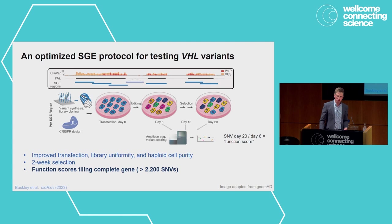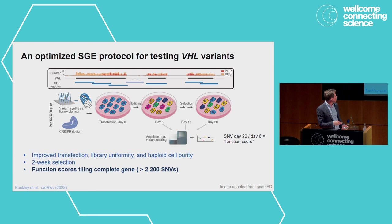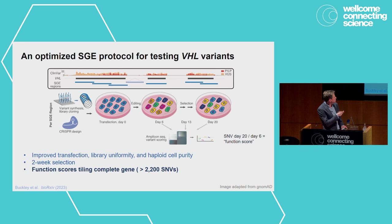We took our SGE protocol and really optimized it to give us more quantitative effects. Key changes include improved transfection, uniformity of our libraries especially in regions of high GC content, and improved haploid cell purity. We made the selection longer — from when editing is completed on day 6, we go a full two weeks before sequencing. Because VHL is a relatively short gene, in only seven SGE libraries we can tile across the complete coding sequence.